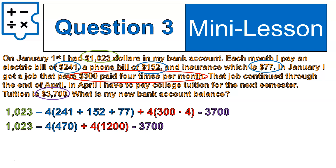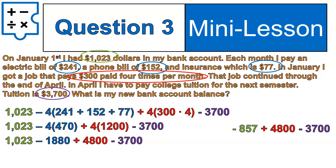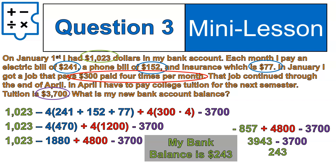I add or multiply the numbers inside the parentheses first, then do all the remaining subtraction. $1,023 minus $1,880 gives me negative $857. Then negative $857 plus $4,800 gives me $3,943. Subtracting the college tuition leaves me with $243 — that's how much I have in my bank at the end of four months, having paid for college tuition and kept up on all my bills.